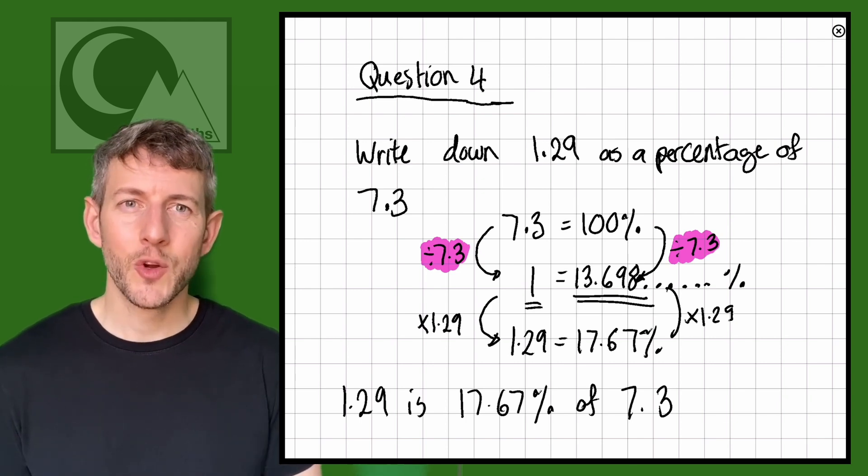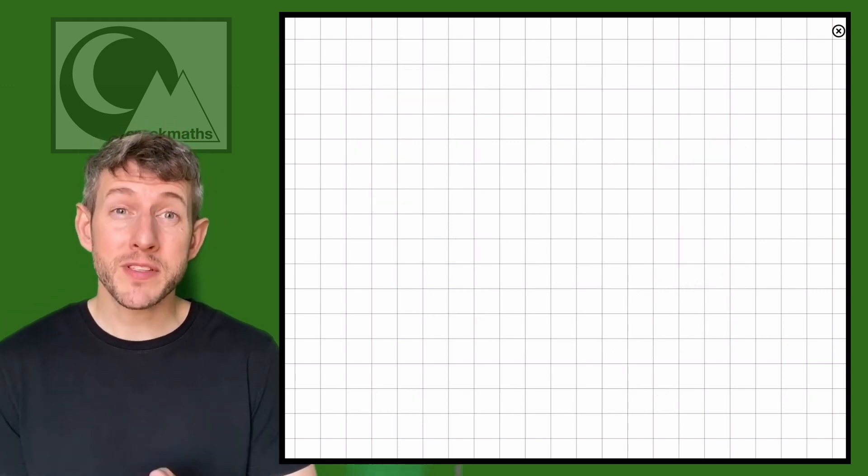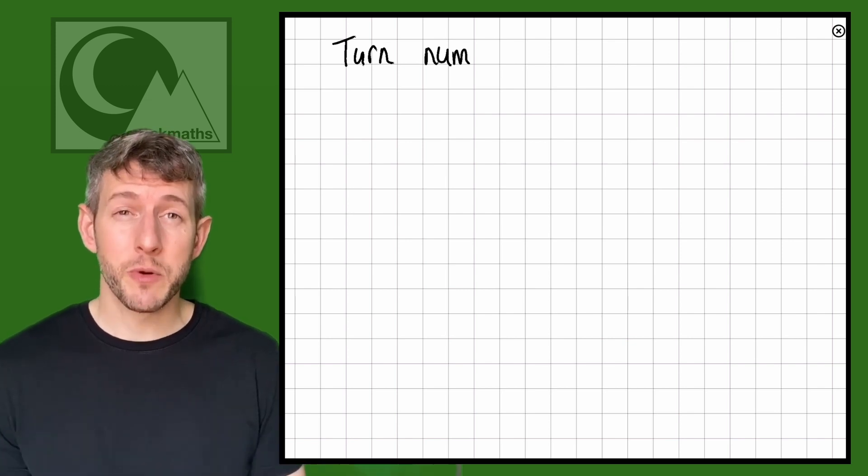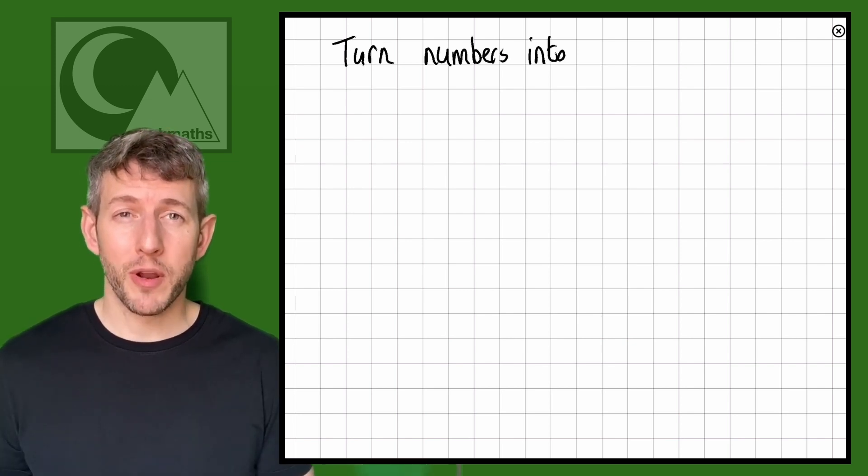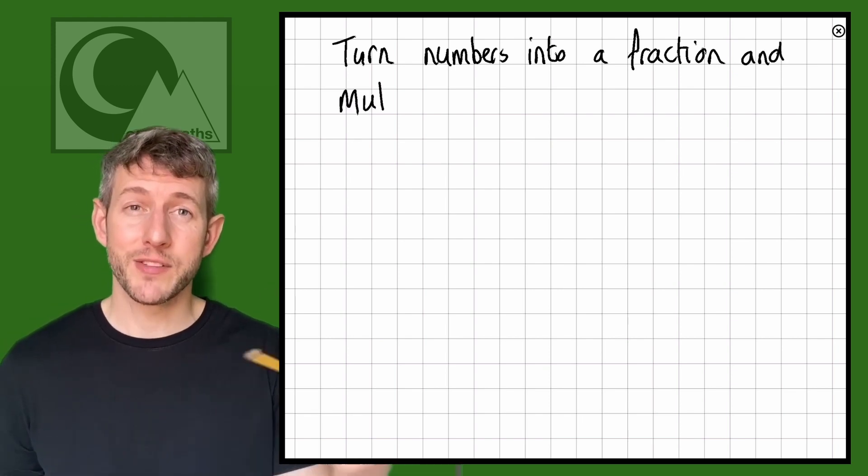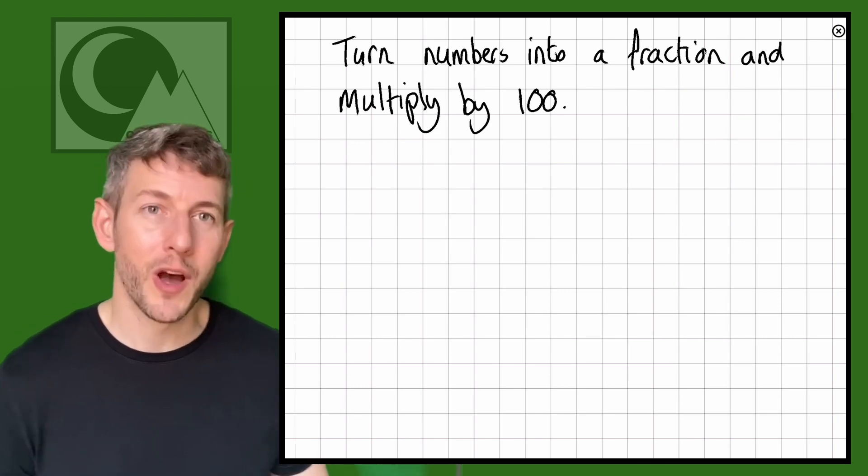Okay, right. Let's continue with the easier method. This method simply relies on you turning the numbers into a fraction and then multiplying it by 100. So remember, when we were turning fractions into percentages, we do the top divided by the bottom, and then we multiply by 100.